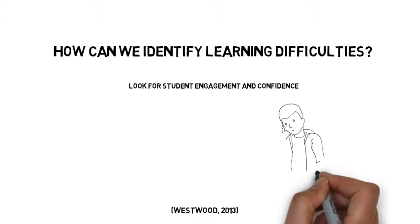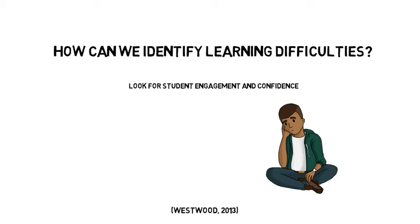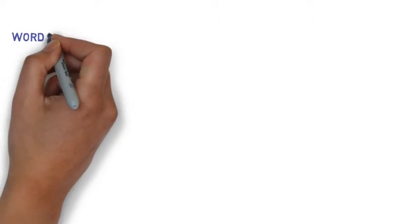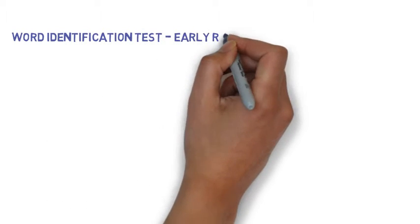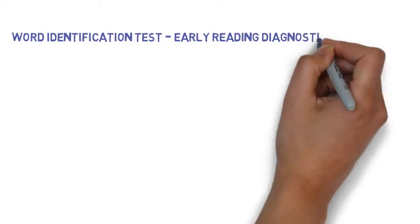Students struggling in any of these areas often feel discouraged or frustrated and likely need more explicit instruction. For further testing, students should undergo the Word Identification Fluency Test Early Reading Diagnostic Assessment.